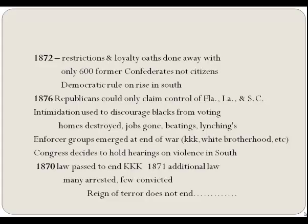Enforcer groups emerged, including the KKK and the White Brotherhood—the text lists about ten of them. Some just put on hoods and went out to intimidate. They wanted to put the Black man back in bondage. The camellias, the White Camellias, and the KKK were the most powerful. Next lesson will cover the story behind the beginnings of the KKK. Keeping the Black man from voting was a very big priority, and if intimidation didn't work, they would whip him or hang him.